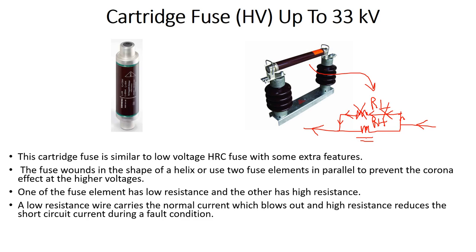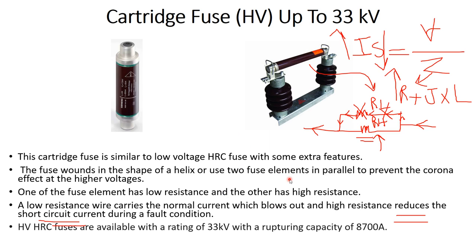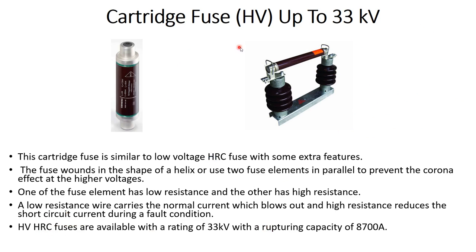The short circuit current is approximately V over Z, where Z equals R plus jX_L. With only the low resistance present, the short circuit current is very high and blows out that element. With only the high resistance remaining, the short circuit current is reduced significantly. The high-voltage HRC cartridge fuse is available with a rating of 33 kV and a rupturing capacity of 8,700 amperes.